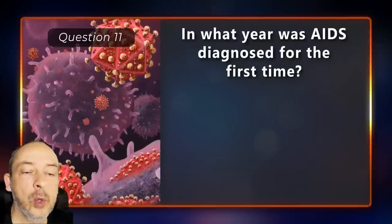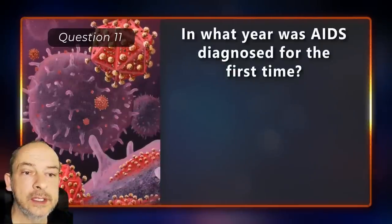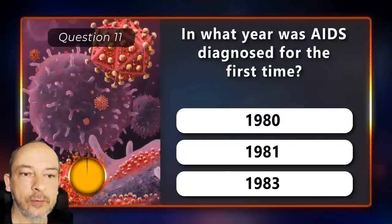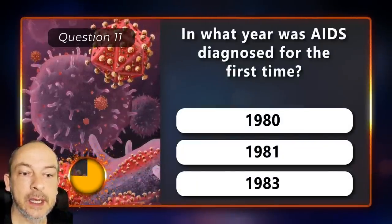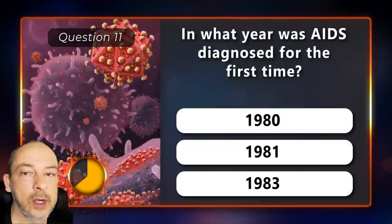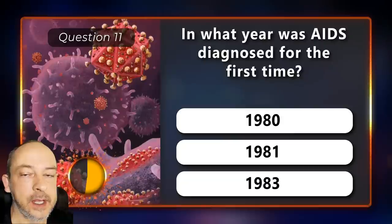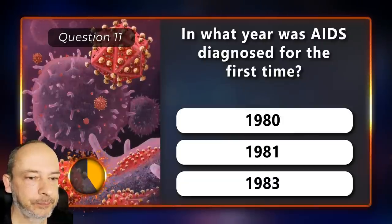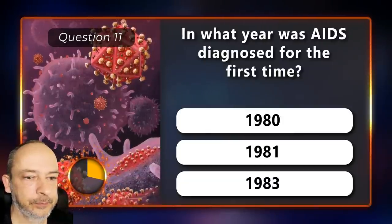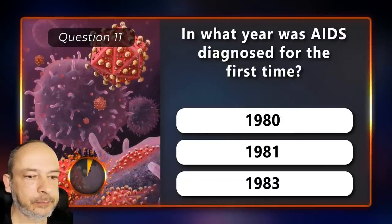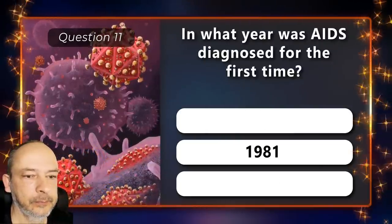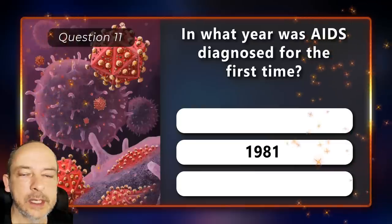In what year was AIDS diagnosed for the first time — 1980, 1981, or 1983? In 1981.